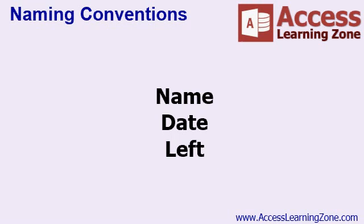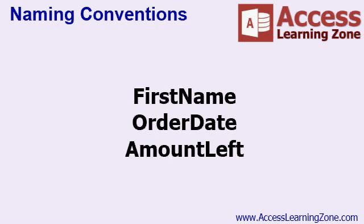There are also certain keywords to watch out for that you shouldn't use as field names. 'Name' for example is a reserved word — Access uses that for its own internal purposes, so don't make a field just called Name. Other reserved words include 'date' and 'left' — those are names of functions. You want to make your field names as descriptive as possible: FirstName instead of Name, OrderDate instead of Date, AmountLeft instead of Left. Very short field names tend to be hard to remember and may be reserved words.